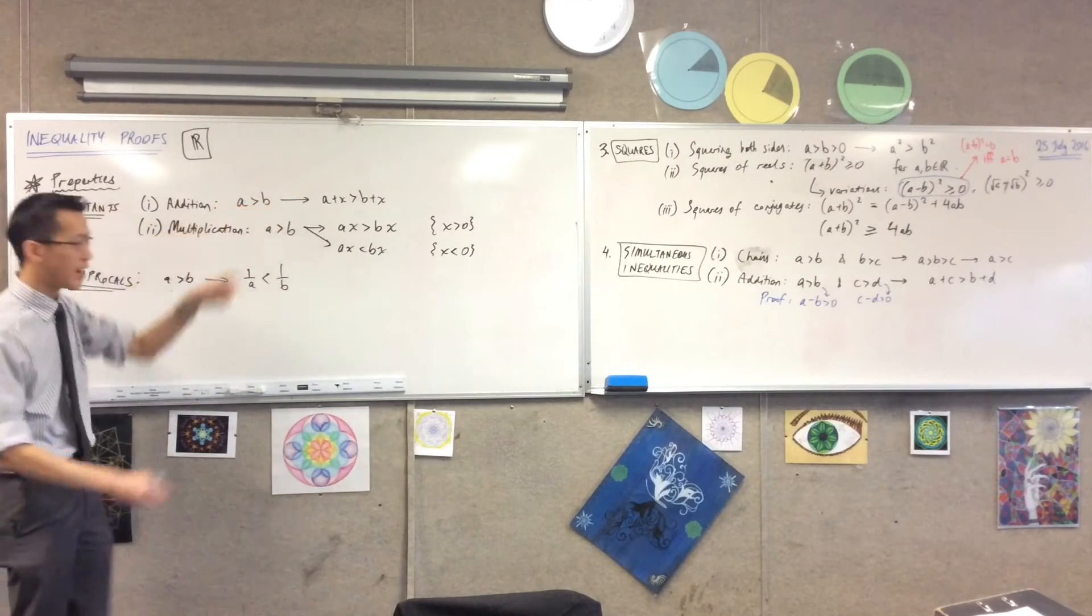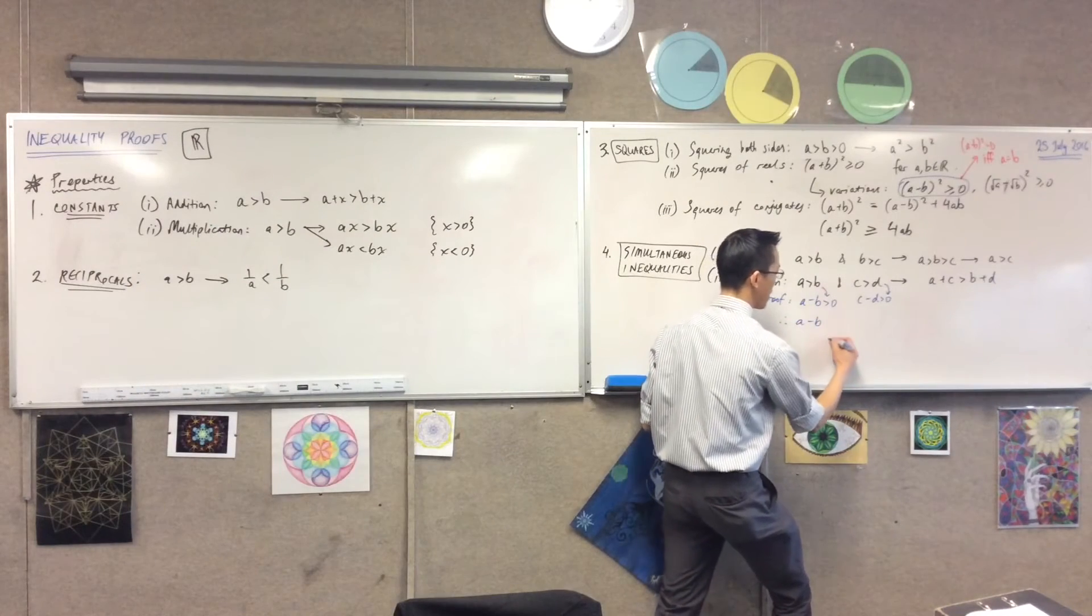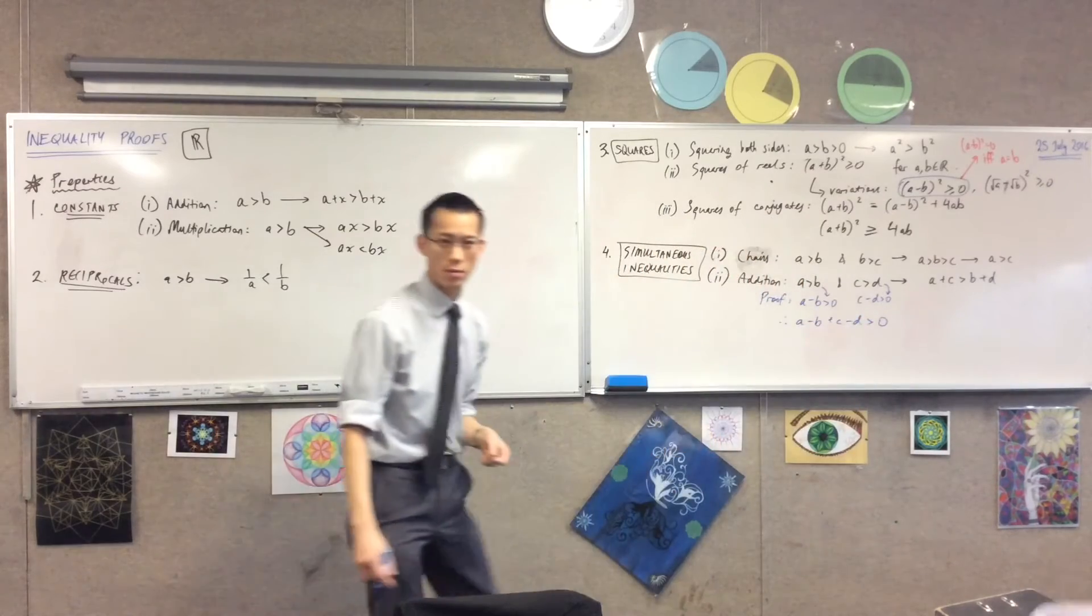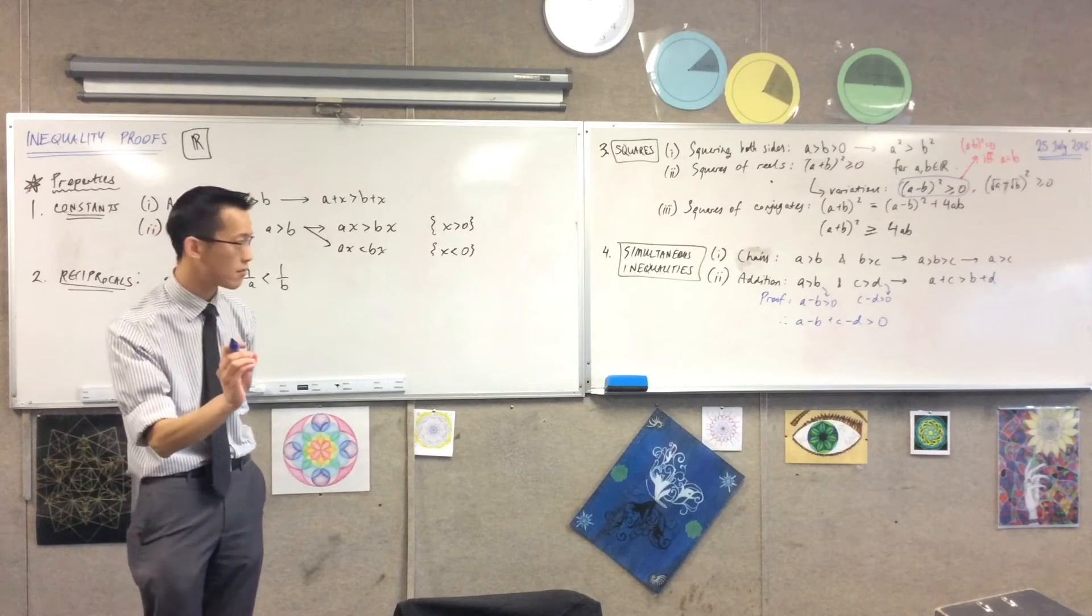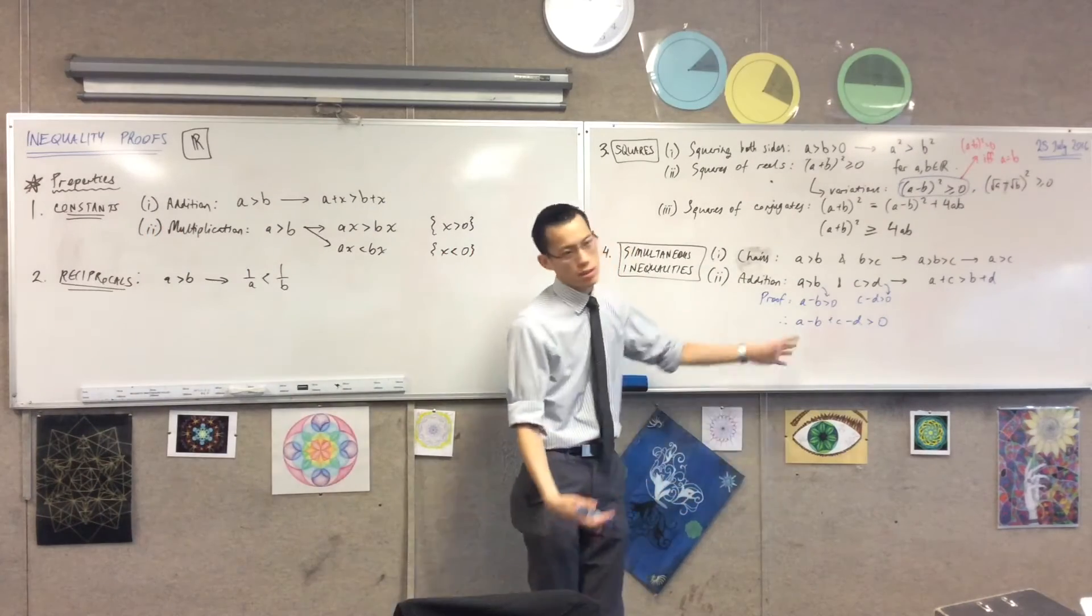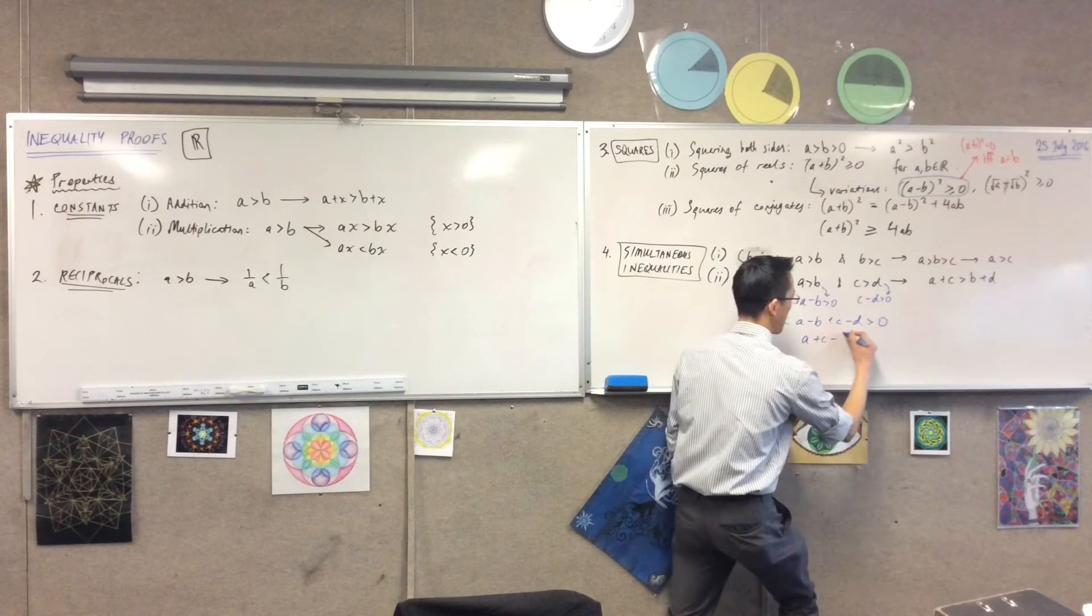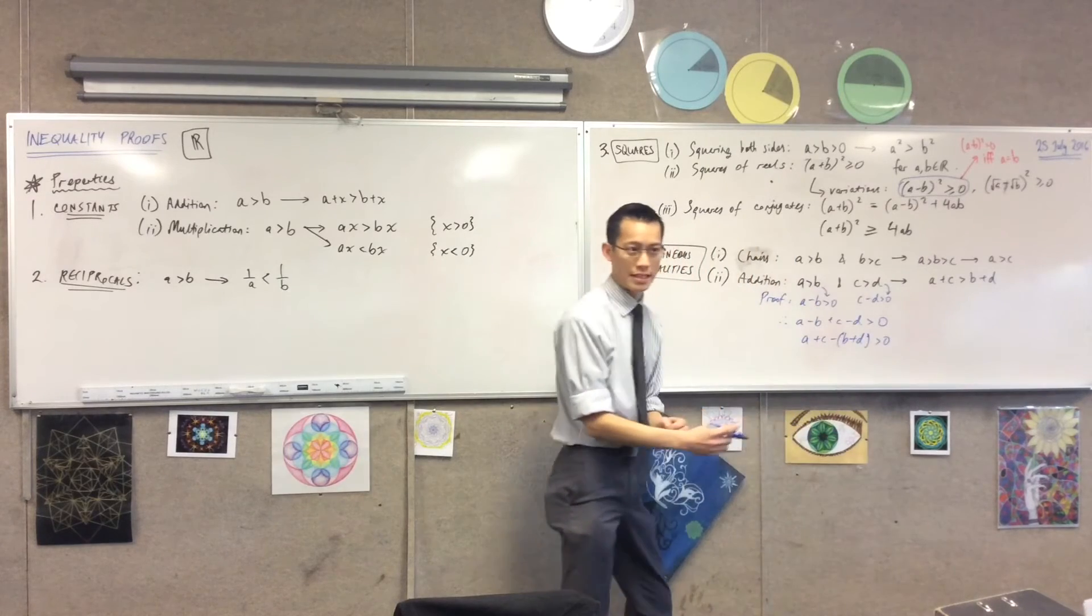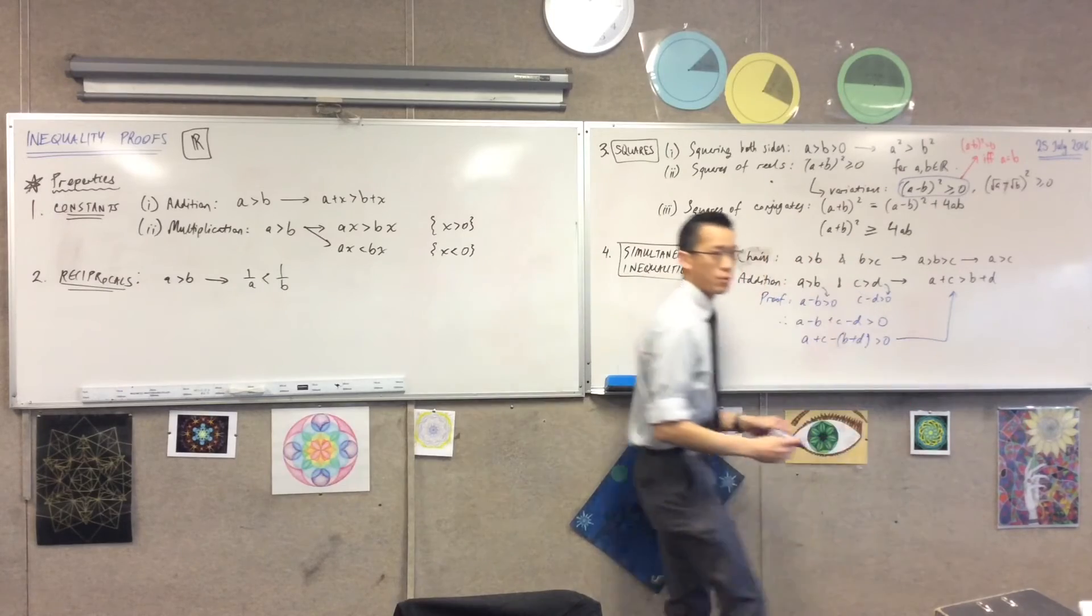So I can say, therefore, A take away B plus C take away D, that's got to be positive. Do you see how I extended the logic just a teeny bit? I consider both those numbers both having to be positive. And now it's just some very trivial rearrangement here. What have I got here? I've got A plus C take away B plus D, just factorizing out that so I can add the whole thing. And then there is the result I'm just trying to prove.